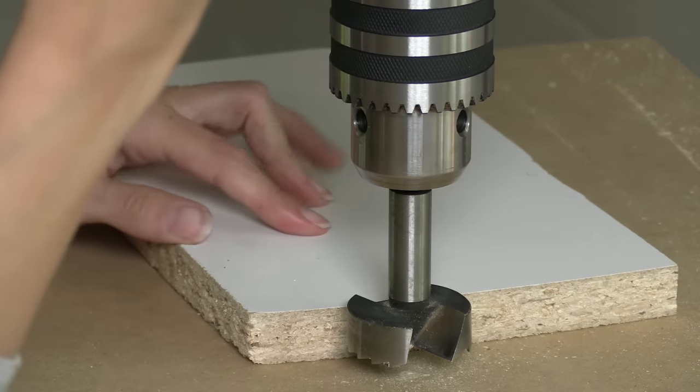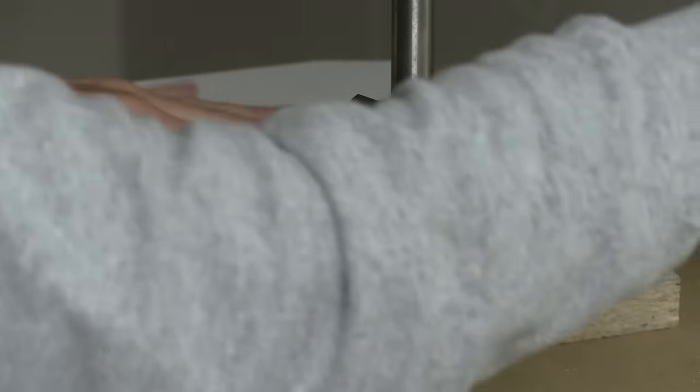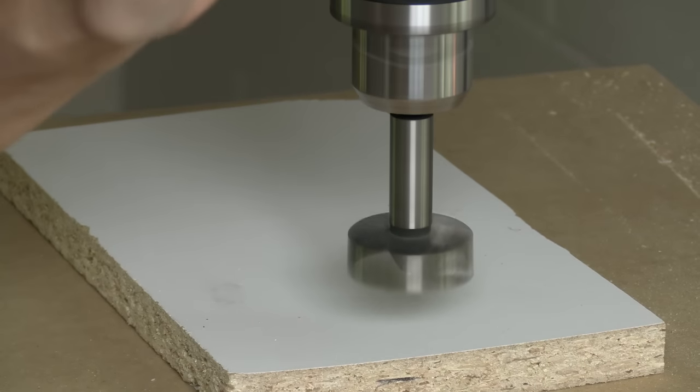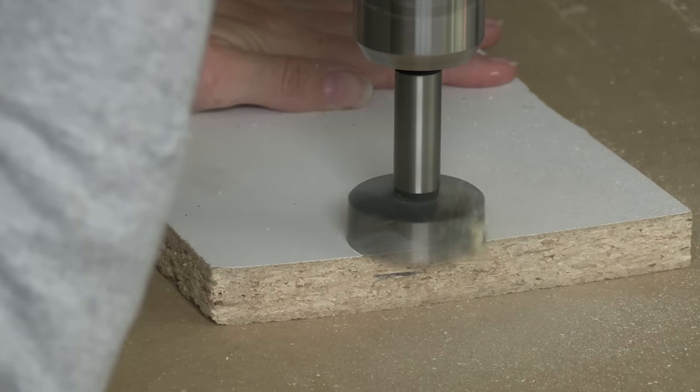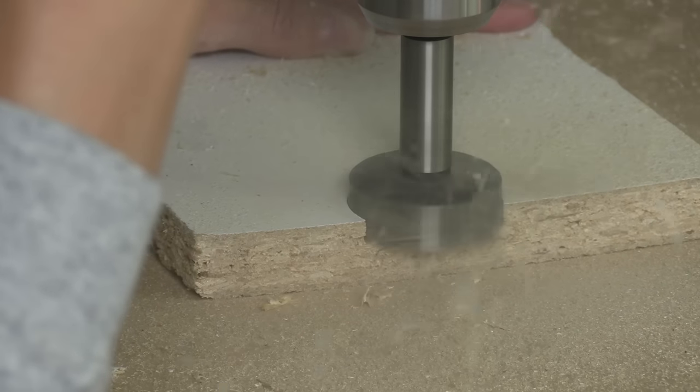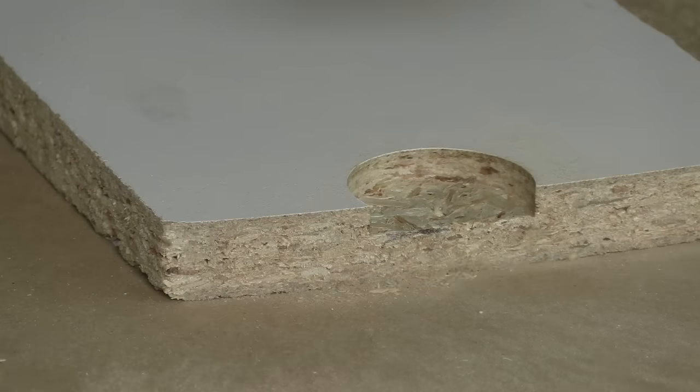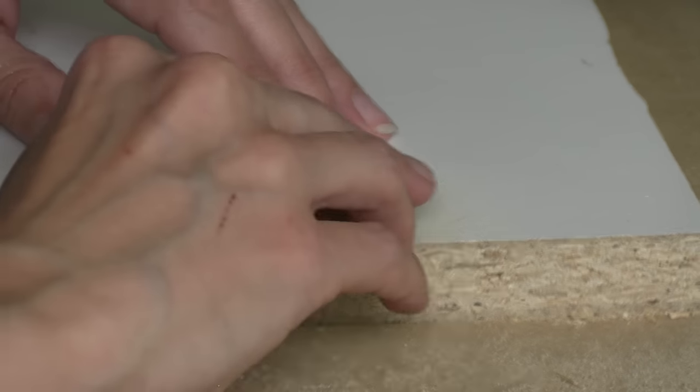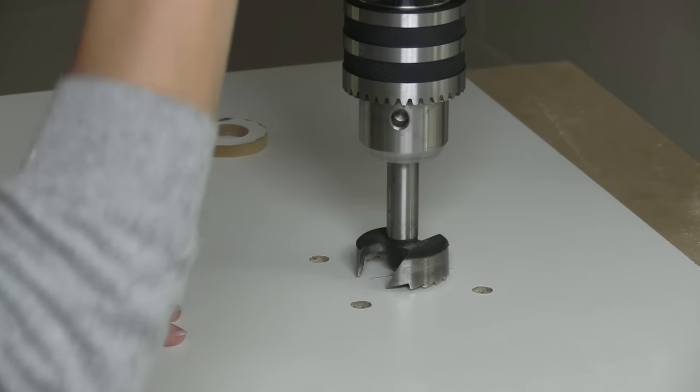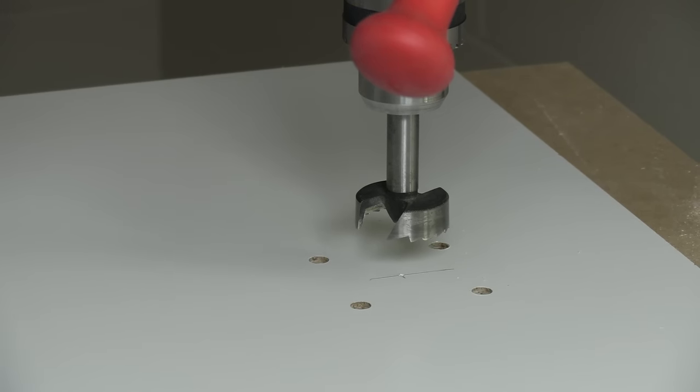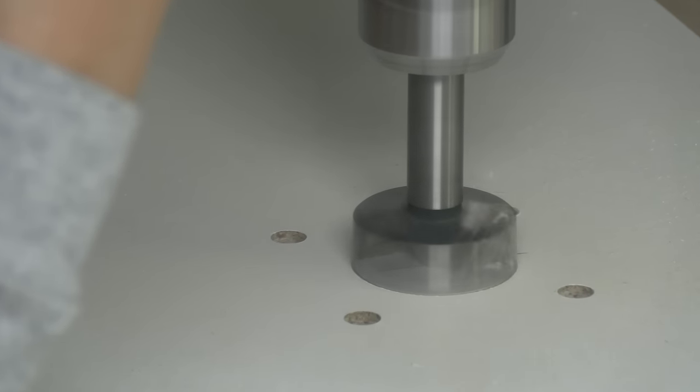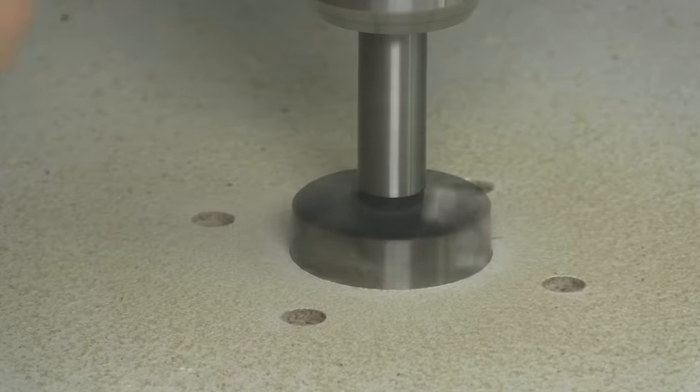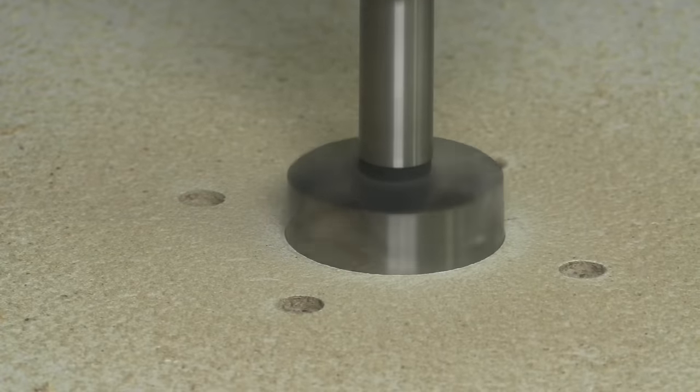Before I go drilling into my router table's actual tabletop, I'll use some of the scrap melamine of the same thickness to test the depth of the hole I'm going to drill to accept those inserts. I need the depth to be precise so that the insert sits flush with the table surface and doesn't impede your ability to run your workpiece over the router itself. Be finicky about this until you dial it in just right because once you drill into your actual router tabletop you've committed. Once I'm happy with the depth, I will drill into the tabletop. Be careful not to pull too hard on the drill press handle because it can go a touch too deep.